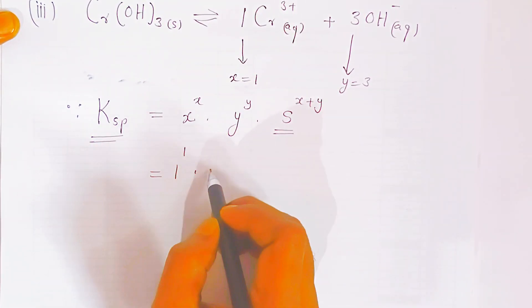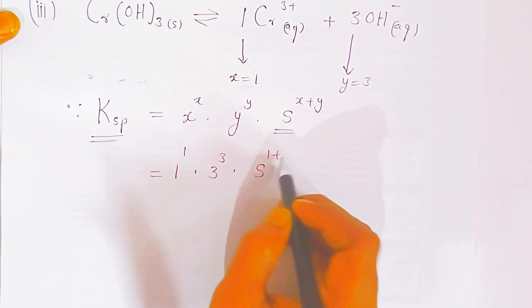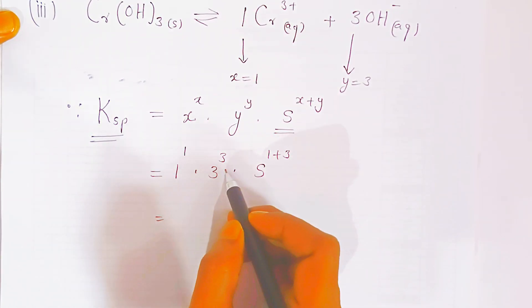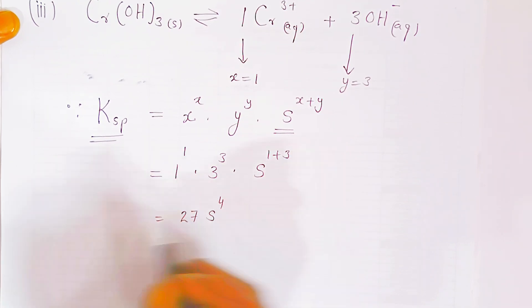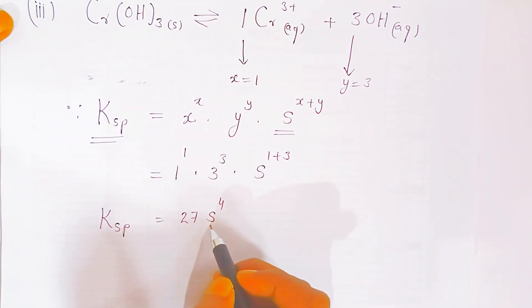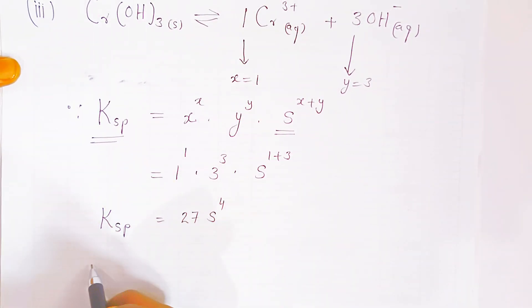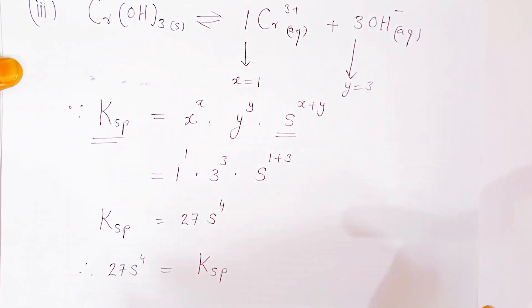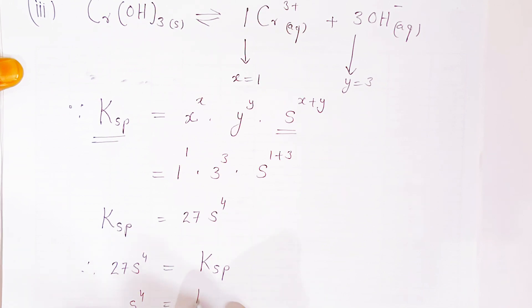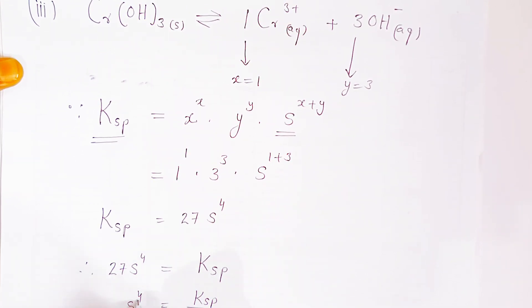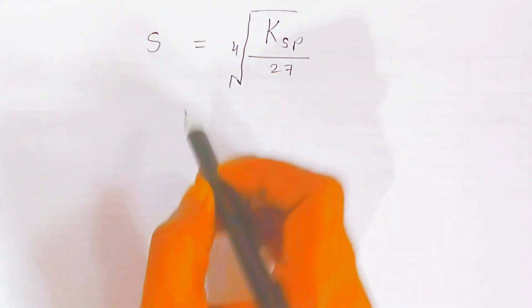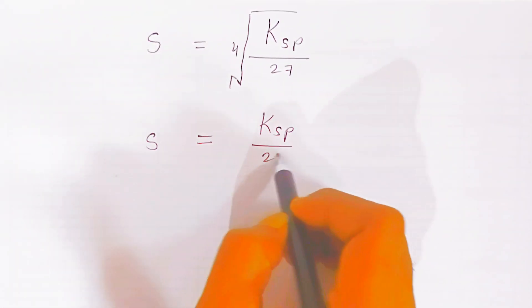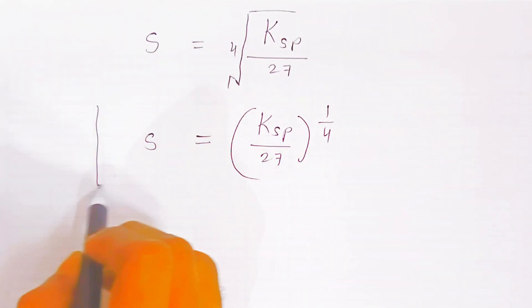Putting in the values: 1 raised to 1 times 3 raised to 3 times S raised to (1+3). So 1 × 27 × S⁴ = 27S⁴. Therefore Ksp = 27S⁴, which means S⁴ = Ksp/27, and taking the fourth root, S = (Ksp/27)^(1/4).